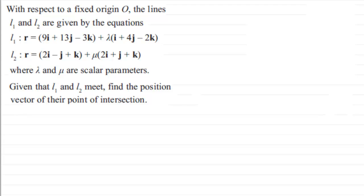Okay welcome back if you had a go. So what we've got here then is with respect to a fixed origin O, the lines L1 and L2 are given by these two equations here.